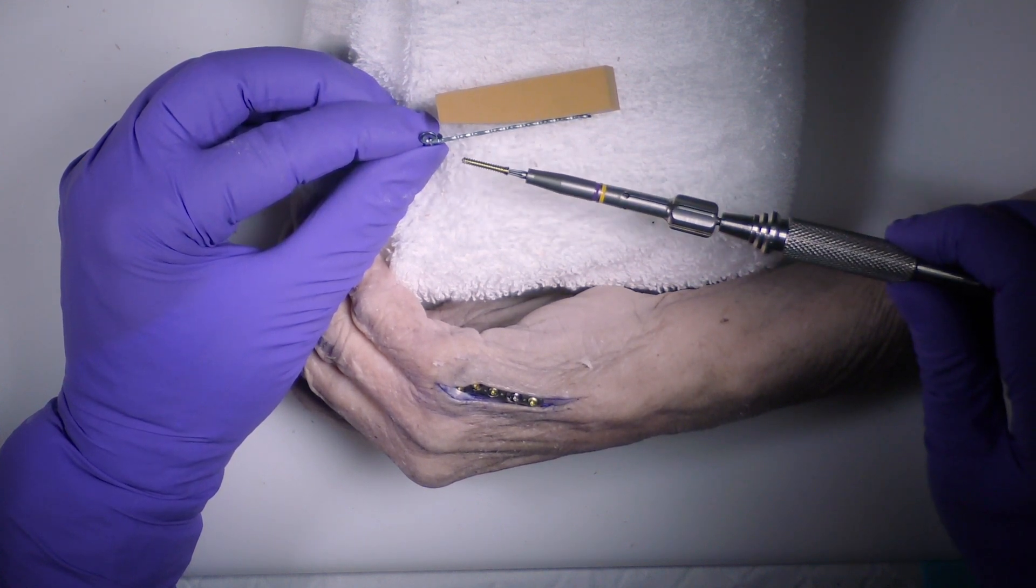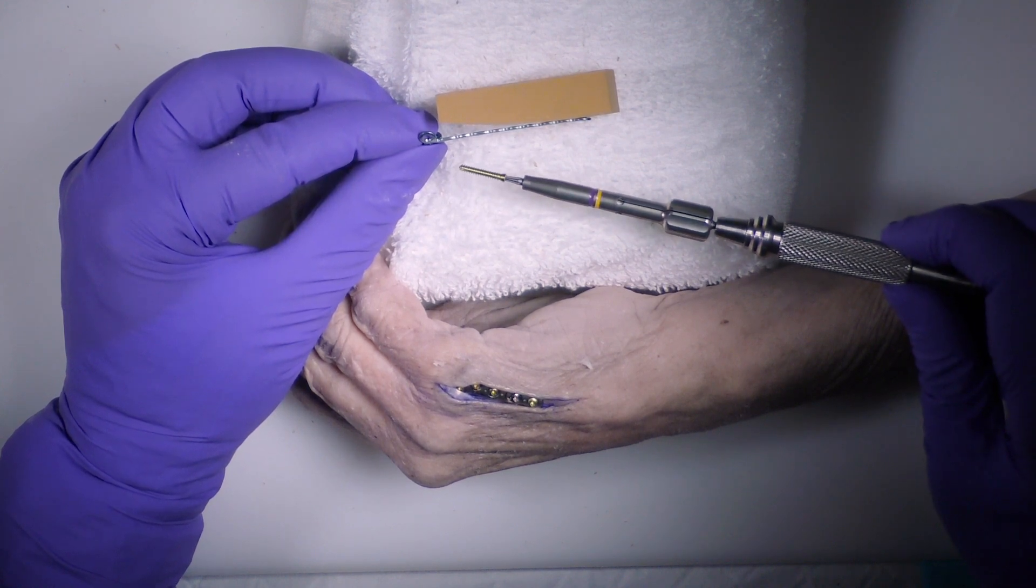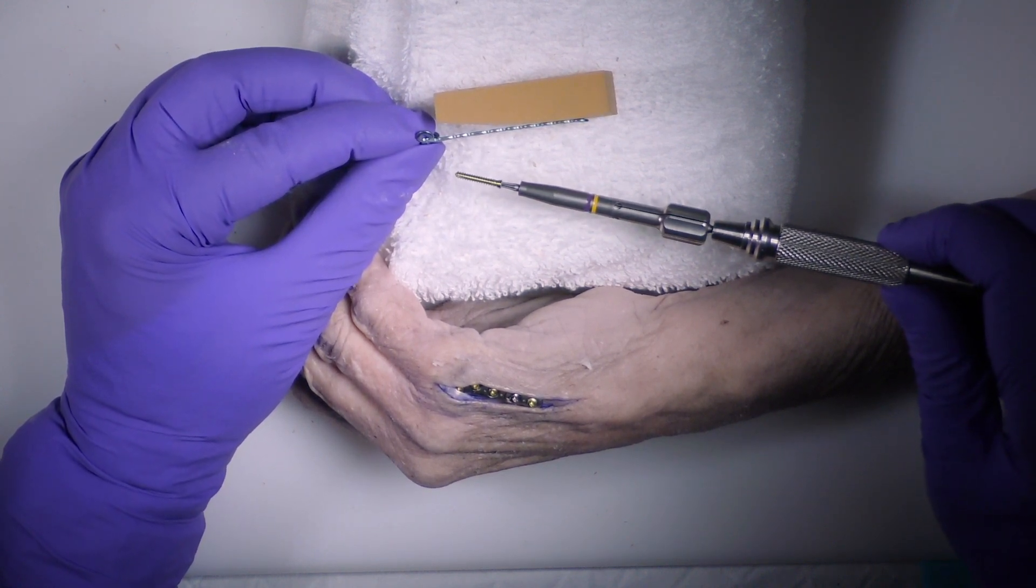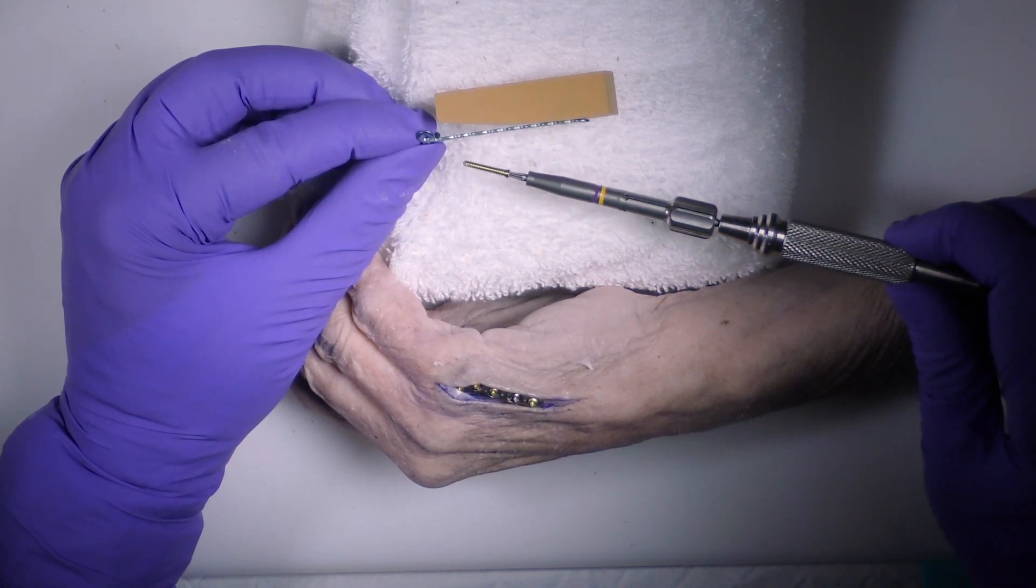Typically in that situation, what we'll do is use a non-locking screw, either definitively or provisionally, to reduce the plate and the bone together.